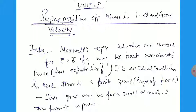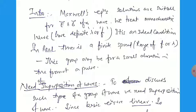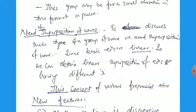So in real life there is a finite range of frequency or wavelength — just like sodium has a six angstrom wavelength and the range of that wavelength is six angstrom. These groups may be for a small duration and for a small form of pulse. Now why do we need the superposition of waves? To discuss such a group of waves, we need superposition of waves, because by superposing two monochromatic waves we obtain the polychromatic wave, or the wave packet, or the group of waves.